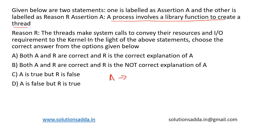Assertion A states that a process involves a library function to create a thread. This statement is true because, in the context of multi-threading, a library function can be used to create a thread within a process. So this statement is true.